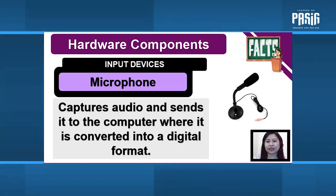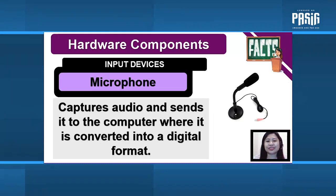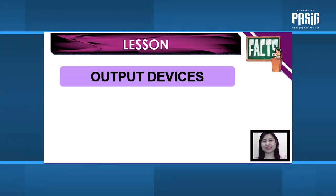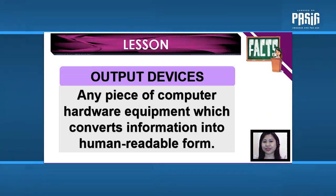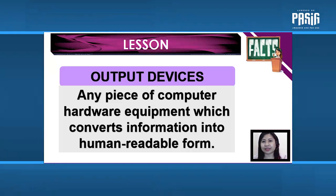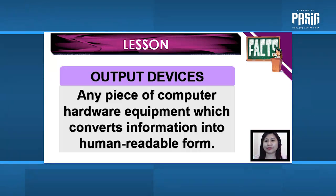And we have the microphone: captures audio and sends it to the computer, where it is converted into a digital format. Output devices, on the other hand, are any piece of computer hardware equipment which converts information into human-readable form. It can be text, graphics, audio, or video.